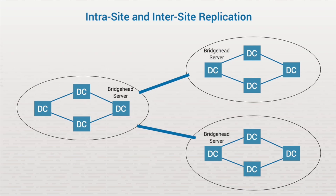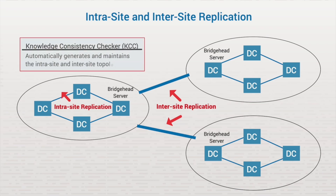The bridgehead servers connect through site links that are matched with WAN links. Each of the bridgehead servers replicates to the other DCs in their sites. The replication within a site is called intrasite replication, and the replication from one site to another is called intersite replication. The site links represent the logical paths that the Knowledge Consistency Checker, or KCC, uses to establish the intersite connectivity for Active Directory replication. The KCC is a Microsoft Server component that automatically generates and maintains the intersite and intrasite topology.